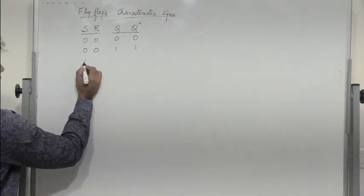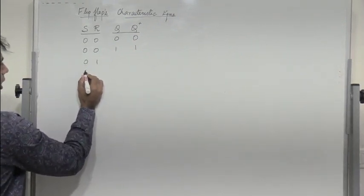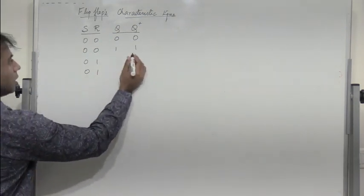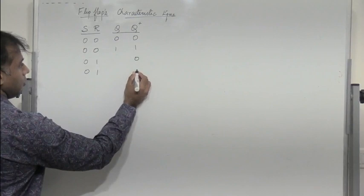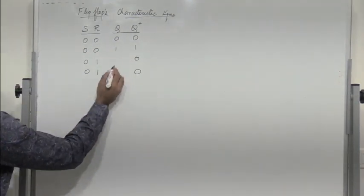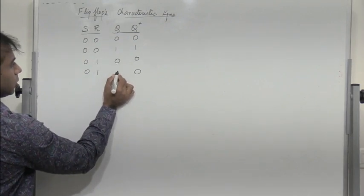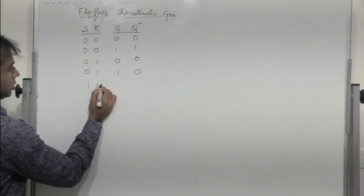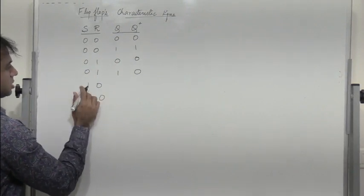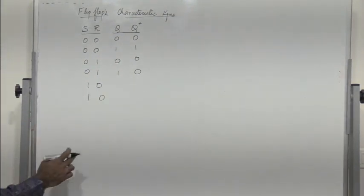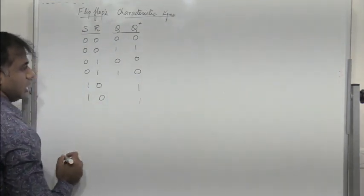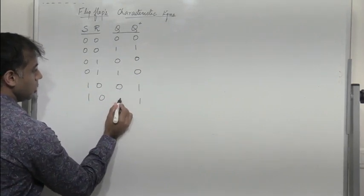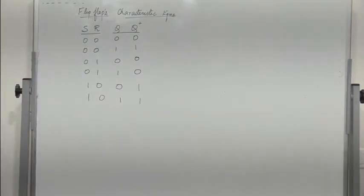When we have S=0 and R=1, the output is always reset — the next state will always be zero, irrespective of whether the current state is zero or one. When S=1 and R=0, the next state is always set, so the next state is always one, irrespective of the current state.